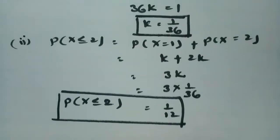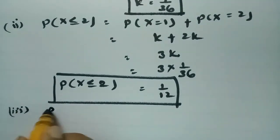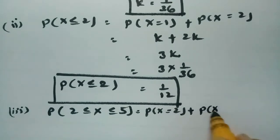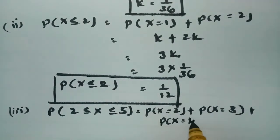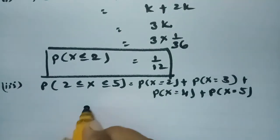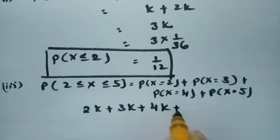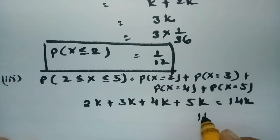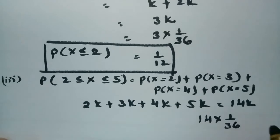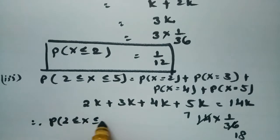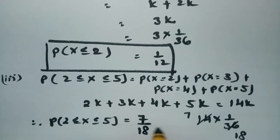Next, we find P(2 ≤ X ≤ 5), which means P(X = 2) + P(X = 3) + P(X = 4) + P(X = 5), that is 2k + 3k + 4k + 5k = 14k. Substituting k = 1/36, we get 14 × (1/36) = 14/36 = 7/18. Therefore, P(2 ≤ X ≤ 5) = 7/18.